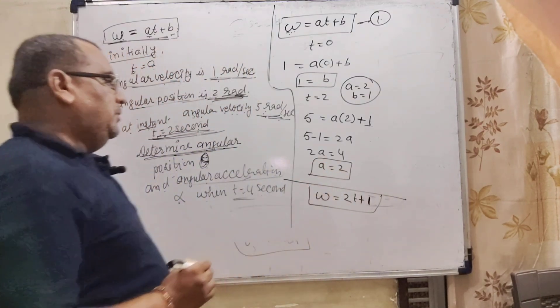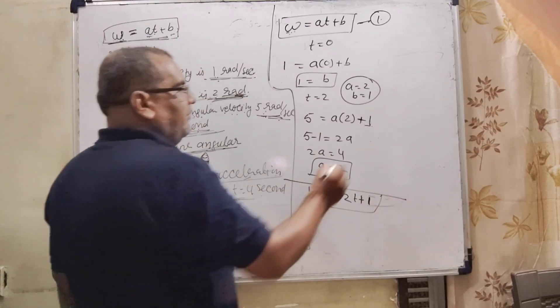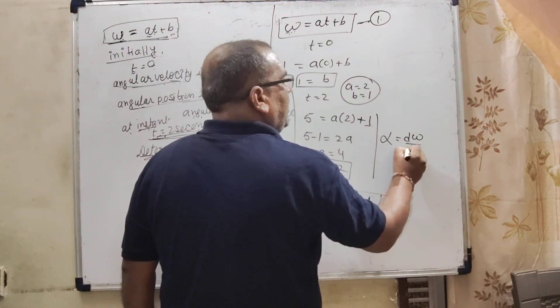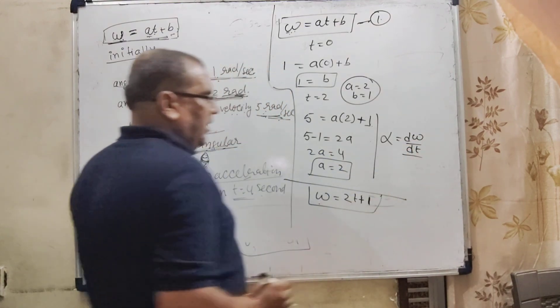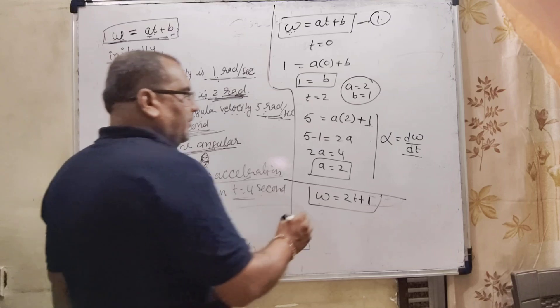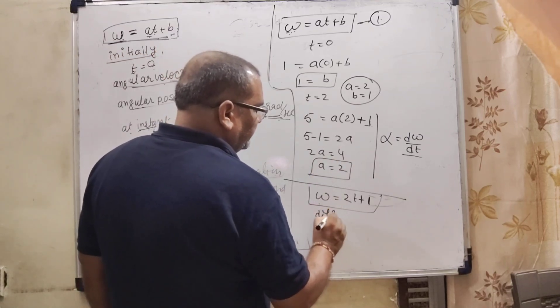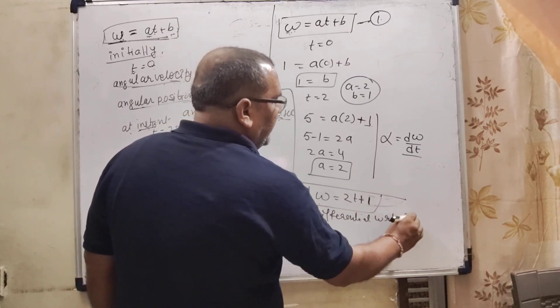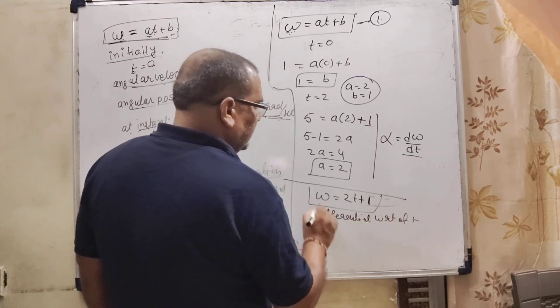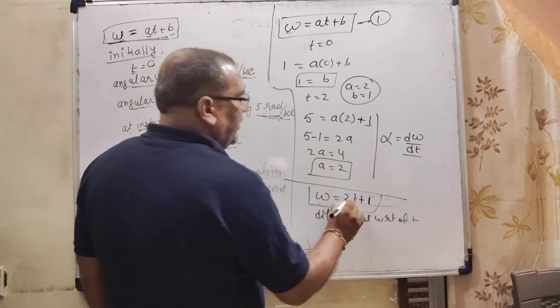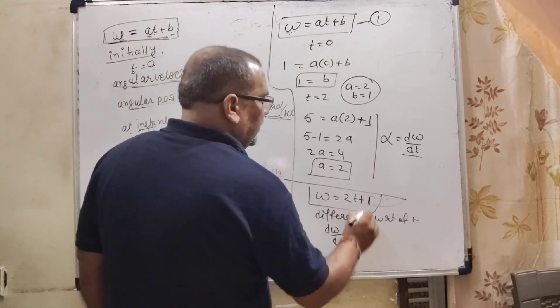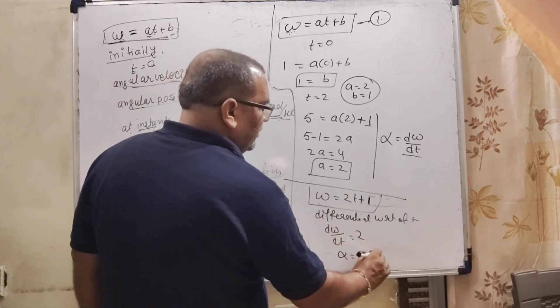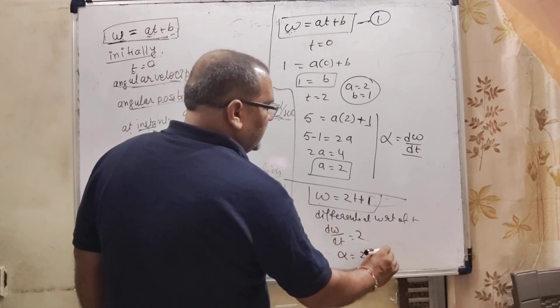Here omega is angular velocity and we know that angular acceleration alpha is equal to d omega upon dt. It means we have to differentiate with respect to t, then we get the alpha. So here differentiate with respect of t both the sides, d omega upon dt.